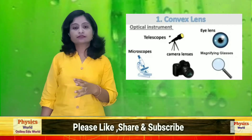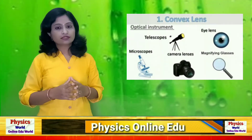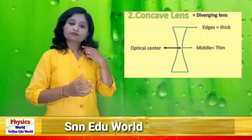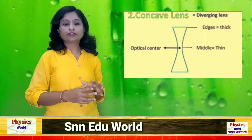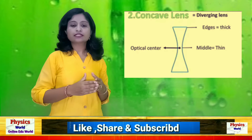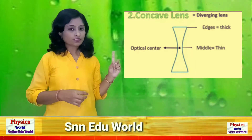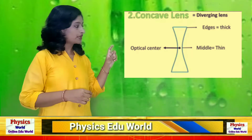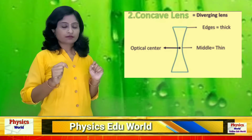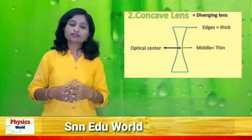Now let's see about the concave lens. The concave lens is basically a divergent lens. Divergent means that each and every ray of light, after refraction, moves in a different direction. The structure of the concave lens has two concave surfaces; the center is called the optical center.